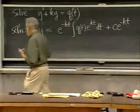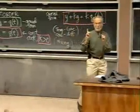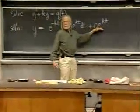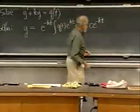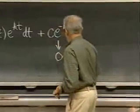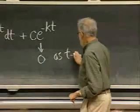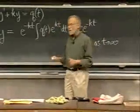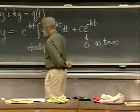Now, when you do this, and if k is positive — that's absolutely essential, only when that is so — then this term goes to zero because k is positive as t goes to infinity. So this goes to zero as t goes to infinity, and it doesn't matter what c is. This other term stays as some sort of function, and so this term is called the steady state or long-term solution.